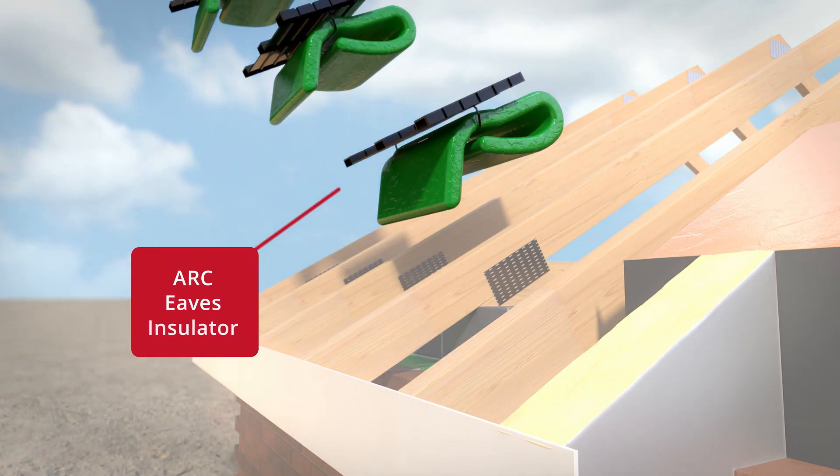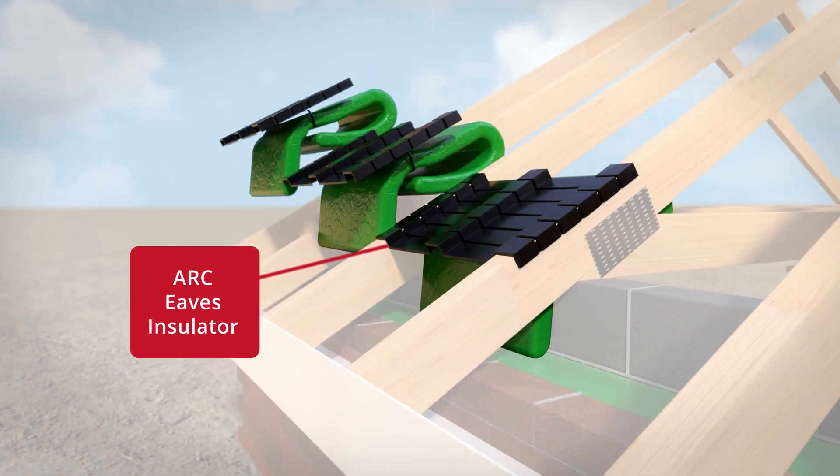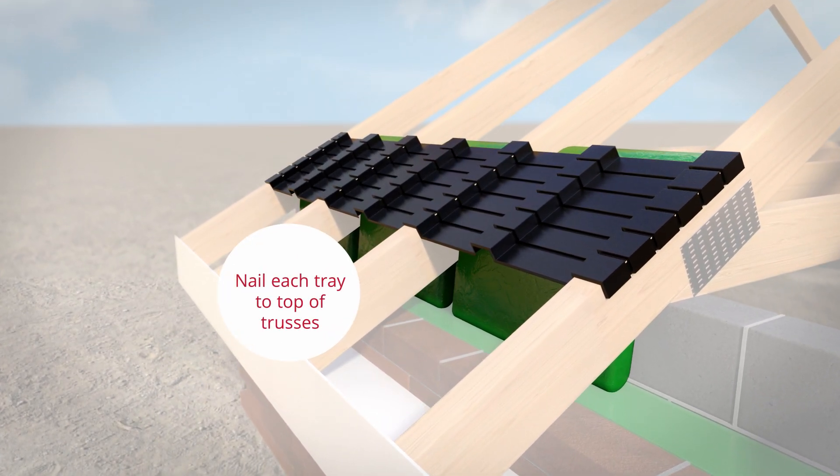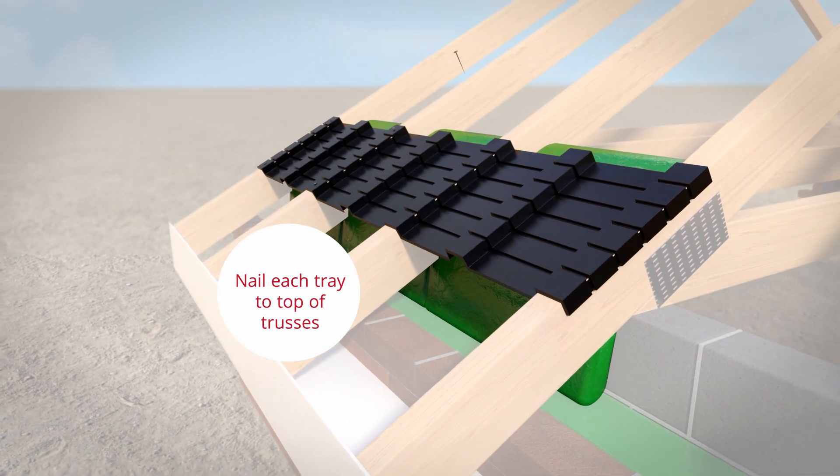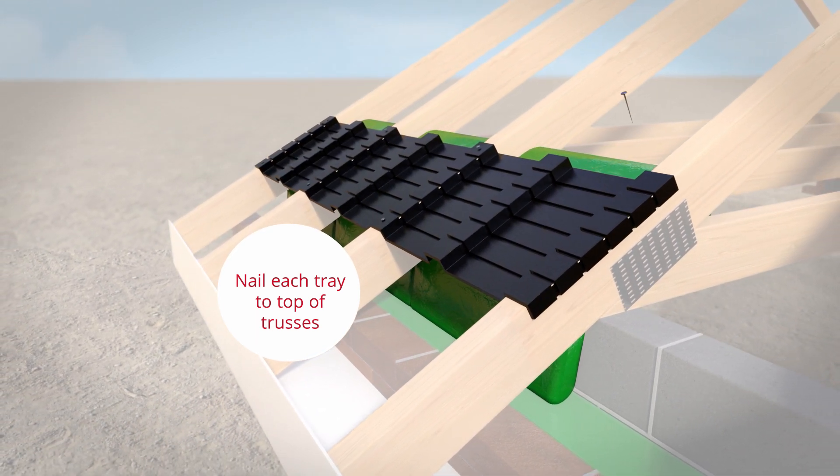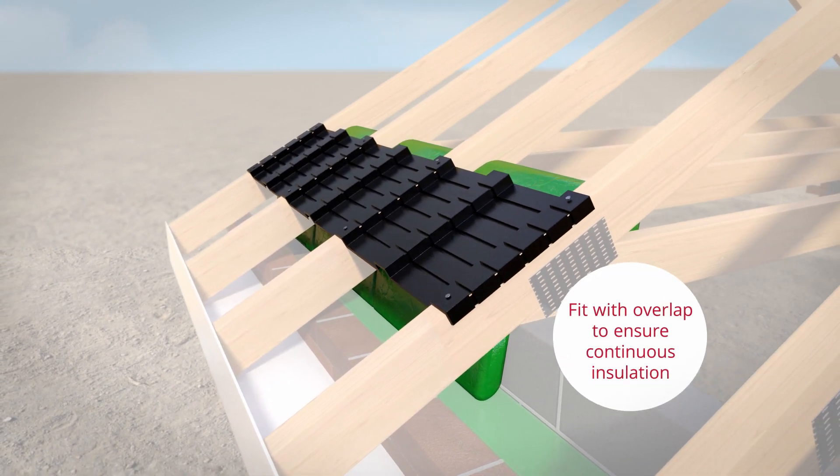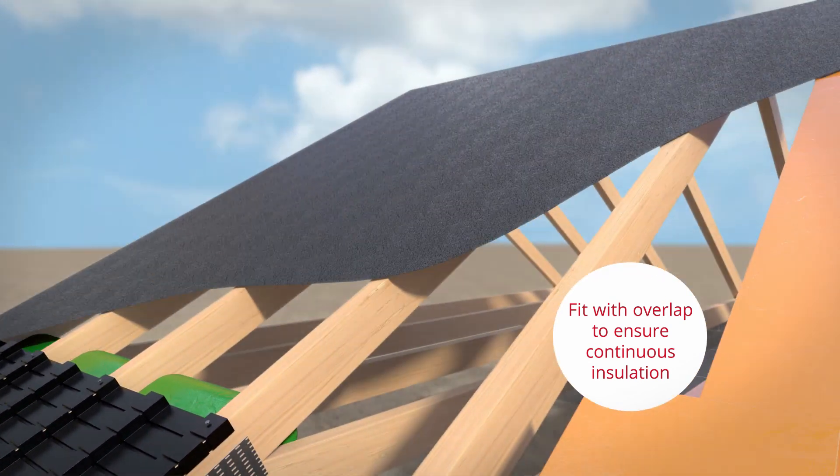A unique product to Arc, the Eaves Insulator provides thermal insulation at the wall plate and ceiling junction. The Arc Eaves Insulator drops down between each truss, providing insulation in both the wall cavity and loft space. This provides a continuous thermal barrier from the external cavity wall over the wall plate and into the loft.